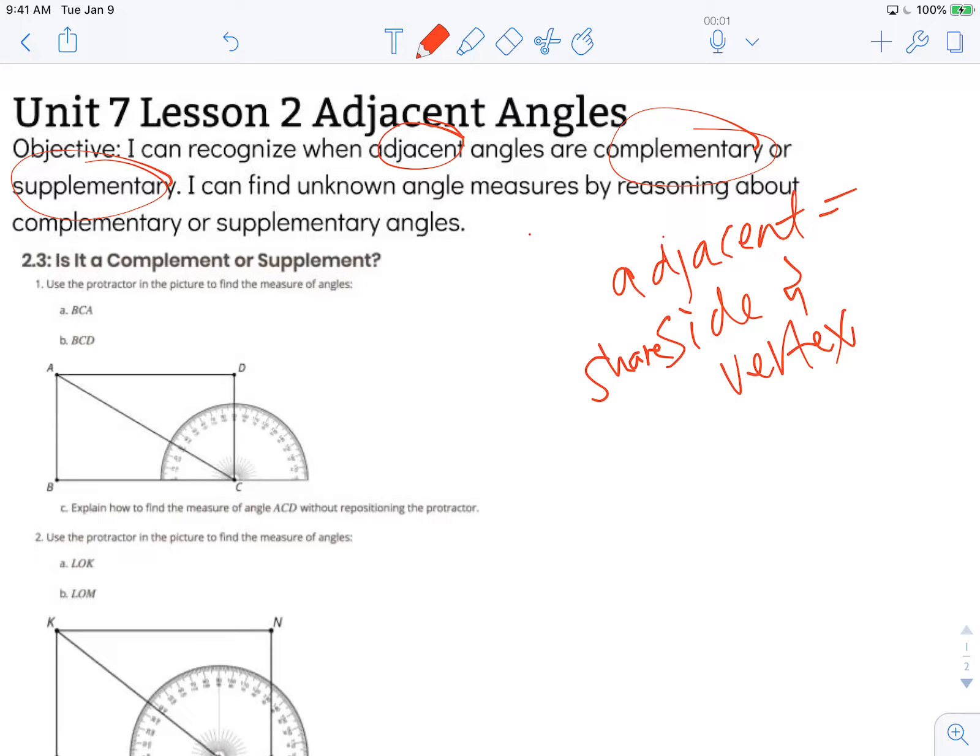We know that complementary angles are angles that combine together to create 90 degree angles or square angles. And supplementary angles combine together to make 180 degree angles or straight angles.